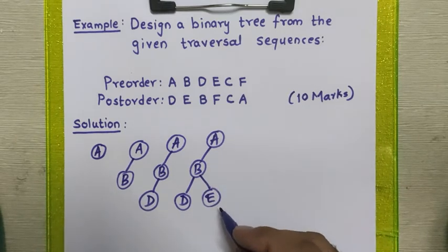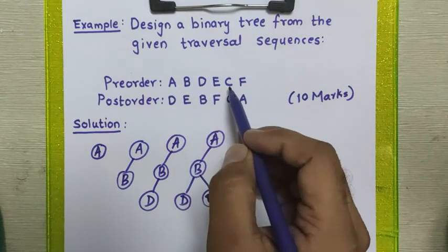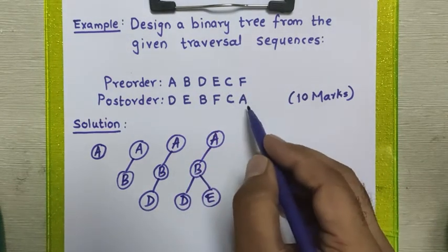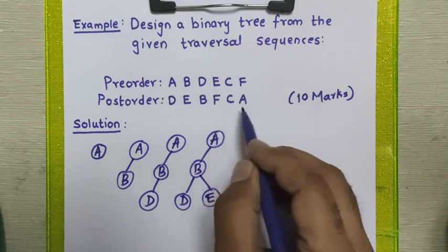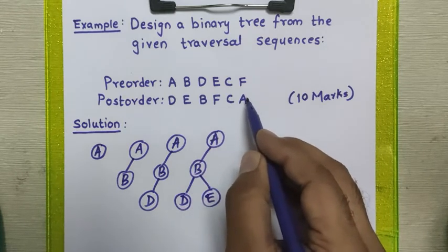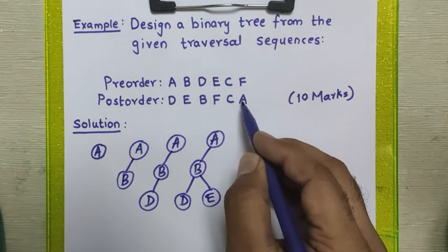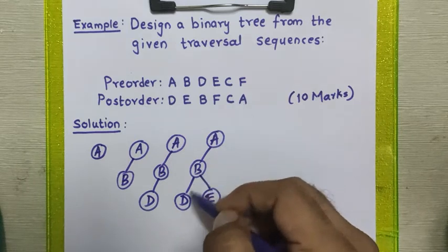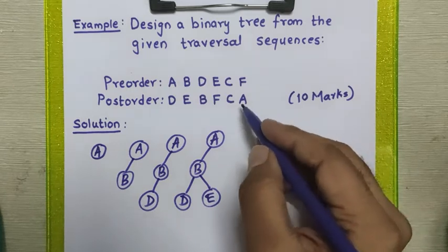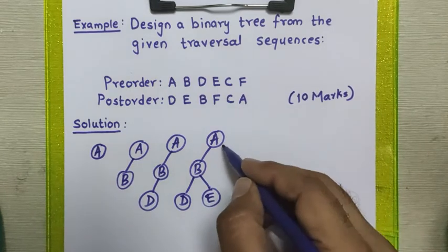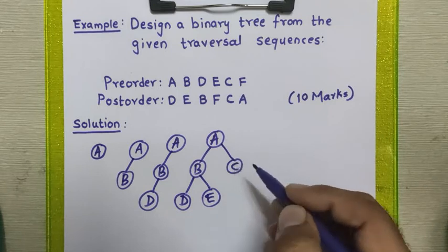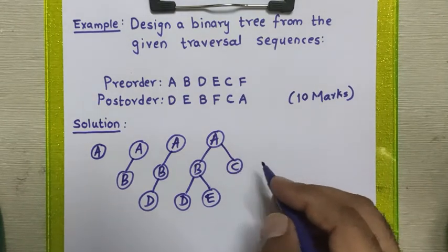After placing E, we take the next element from the pre-order sequence: node C. Checking the post-order sequence, it appears immediately before node A, which means it is part of node A. Looking at the diagram, node A's left side is already occupied, so node C goes directly to the right side of node A.